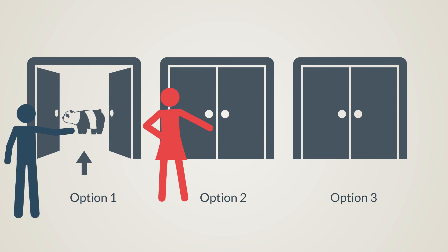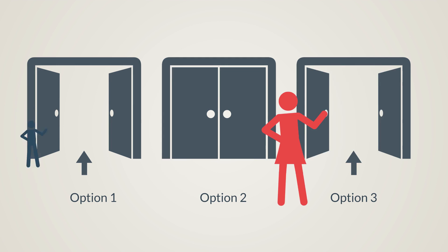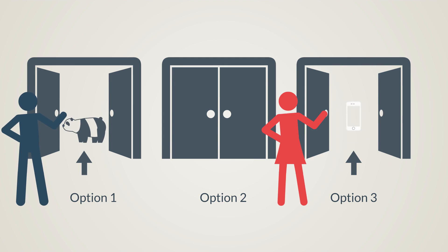Now, the host has revealed a bear behind one of the two doors and asked the contestant if she wants to switch her choice. Lisa used her maths technique and she switched to the third door. And she got her brand new iPhone.